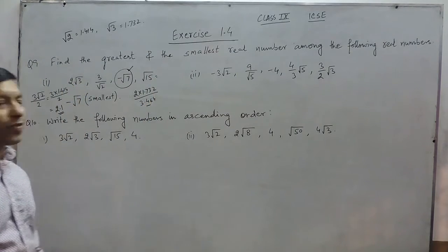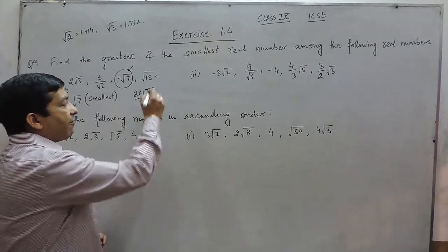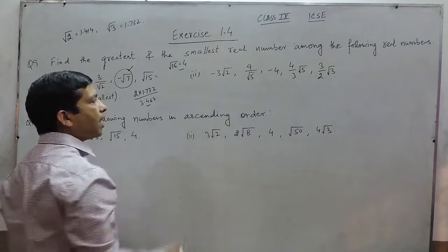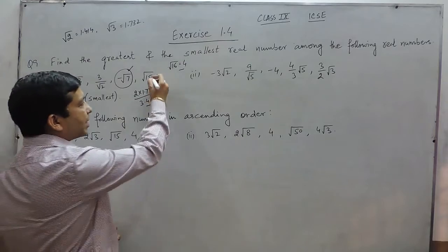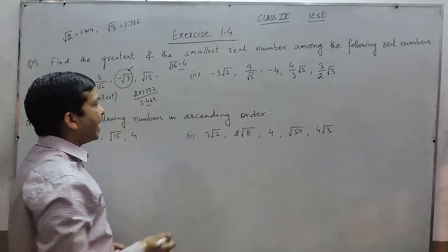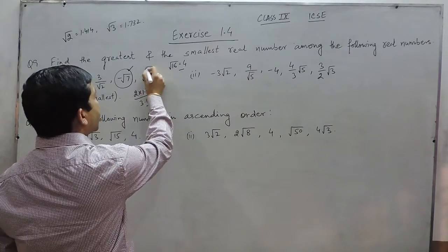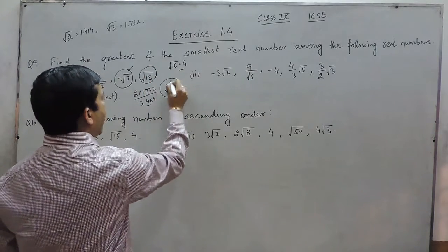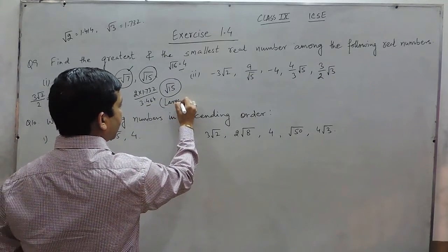When we talk about under root of 15, we know that under root of 16 is 4. Because under root of 16 is 4, definitely under root of 15 must be very near to it, so this is approximately 3.8. So we can say that the largest real number is under root of 15, and the smallest is minus under root of 7.